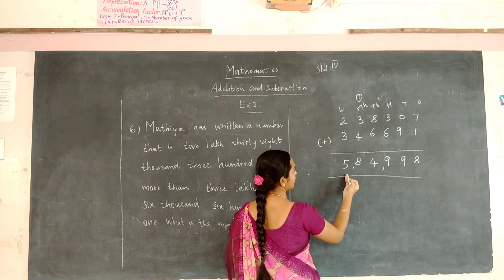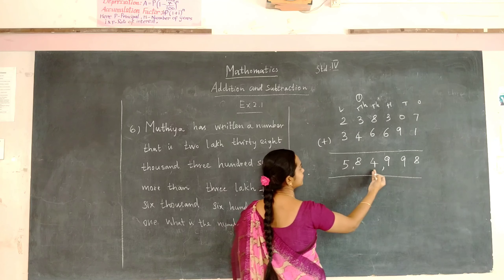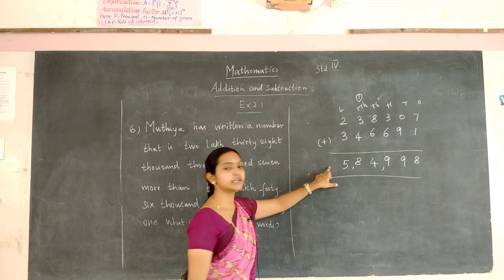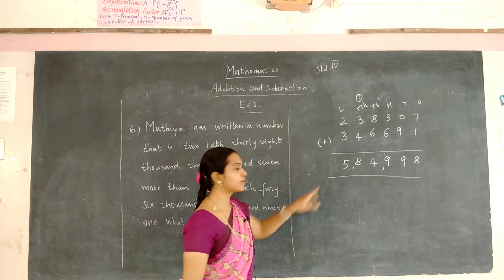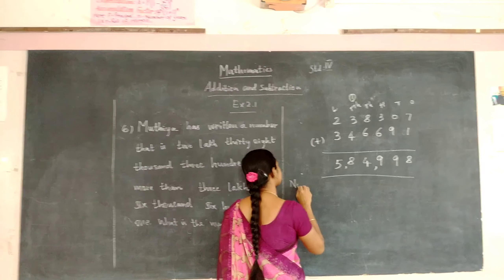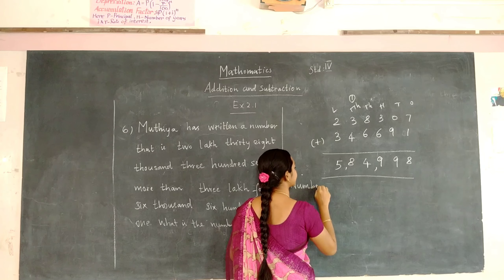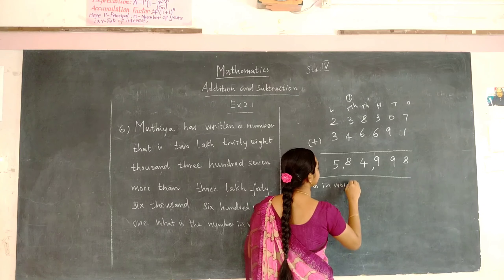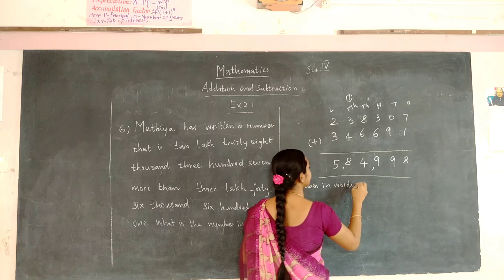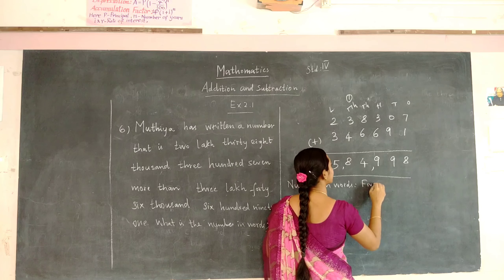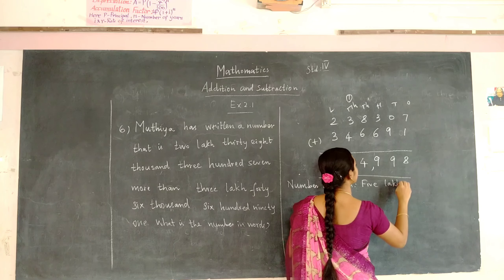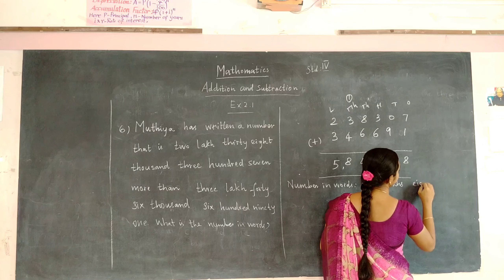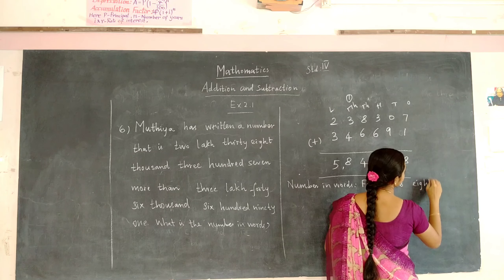So the answer we got is 5,84,998. The numbers are now in figures, and we are going to convert the number into words: 5,84,998.